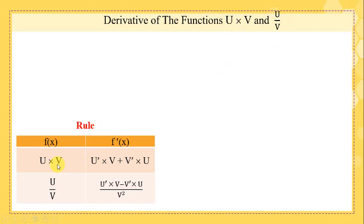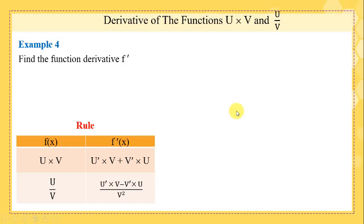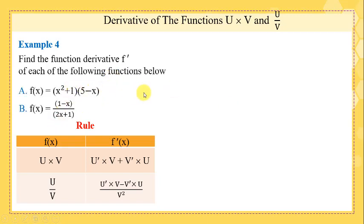We have a new rule. For u times v, the derivative is u'·v + v'·u. For u over v, the derivative is (u'·v - v'·u) / v². Pay attention — these two rules are the most important rules in our chapter. Here we will talk about the pattern; this is the easier way to do the calculation.